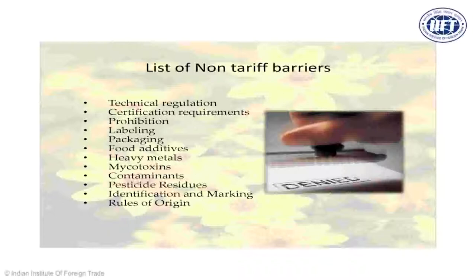Technical regulations: if you miss certain technical regulations, your products can be detained at the foreign port. You are supposed to carry certain certifications — for example, meat products in the Middle Eastern market need halal certifications, and for agricultural products you need phytosanitary certifications confirming the product is good to eat. Without those certifications, your products will not be allowed to enter the foreign market. Also, certain countries have prohibited product categories — like India's OGL restricted and prohibited lists — so please check which products are prohibited either for export from India or import in a particular country.